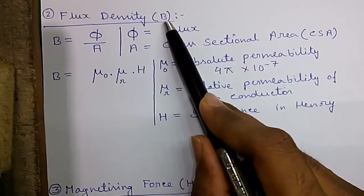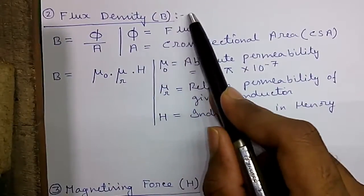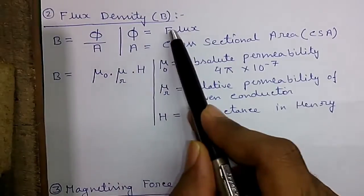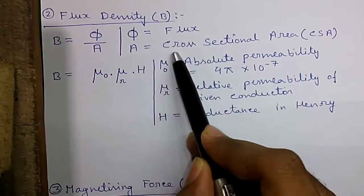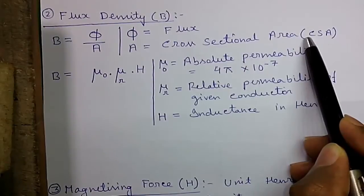Formula number two, the flux density, represented by B. B equals to phi by A, where phi is the flux and A is the cross sectional area or CSA.